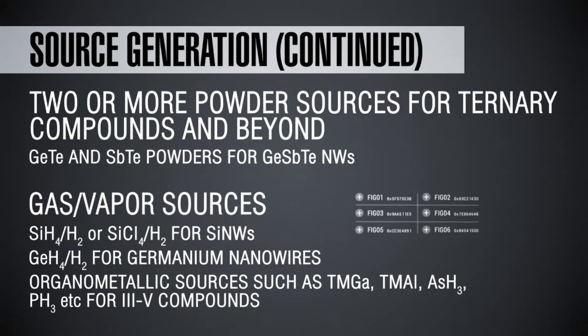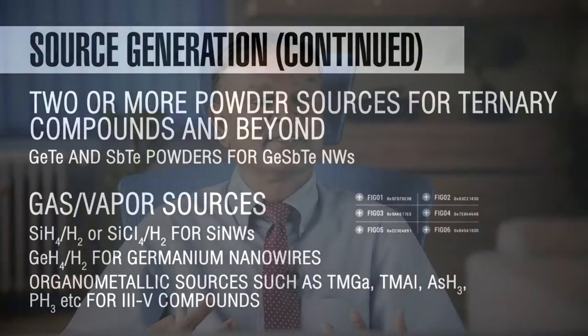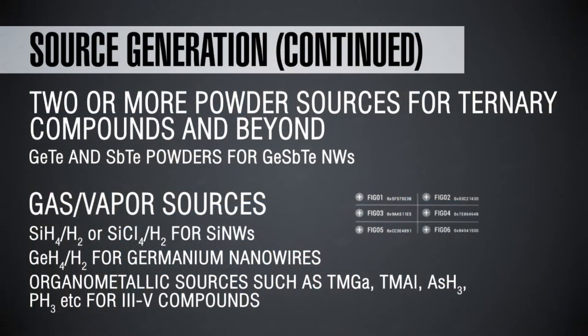You can also use gas and vapor sources. As I mentioned earlier, you can use silane-hydrogen or silicon tetrachloride and hydrogen if you want to grow silicon nanowires. These are exactly the same sources that you would use when you try to grow silicon in the form of a two-dimensional thin film. Likewise, germane and hydrogen for germanium nanowires. Organometallic sources such as trimethyl gallium, trimethyl aluminum, arsine and phosphine, for III-V compounds.